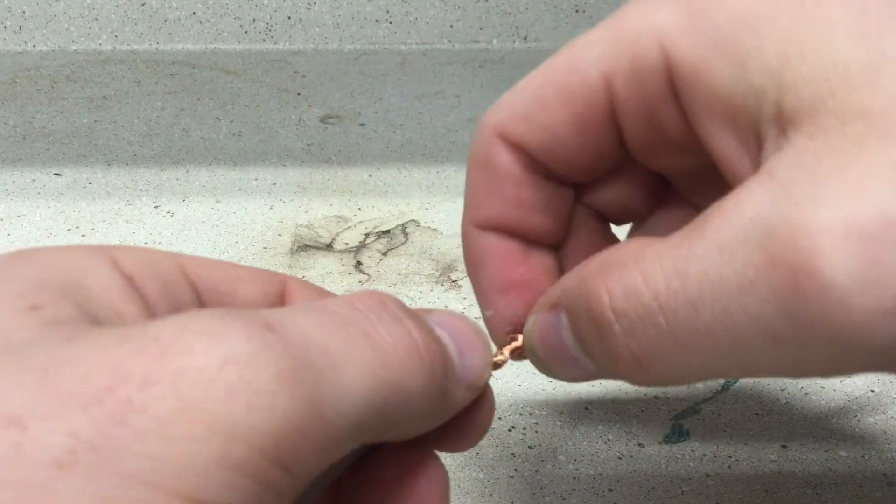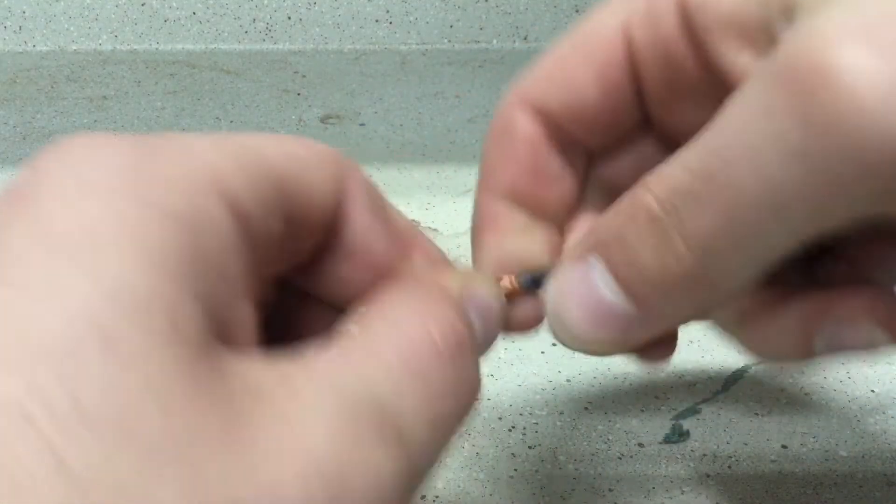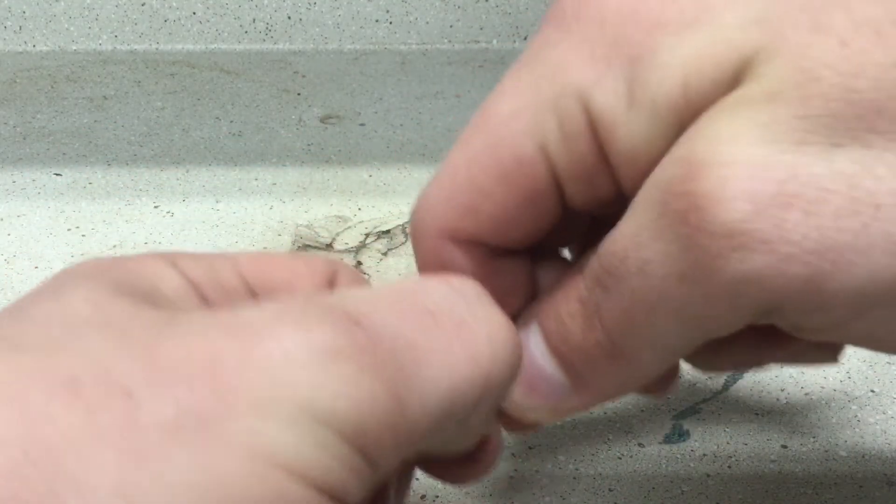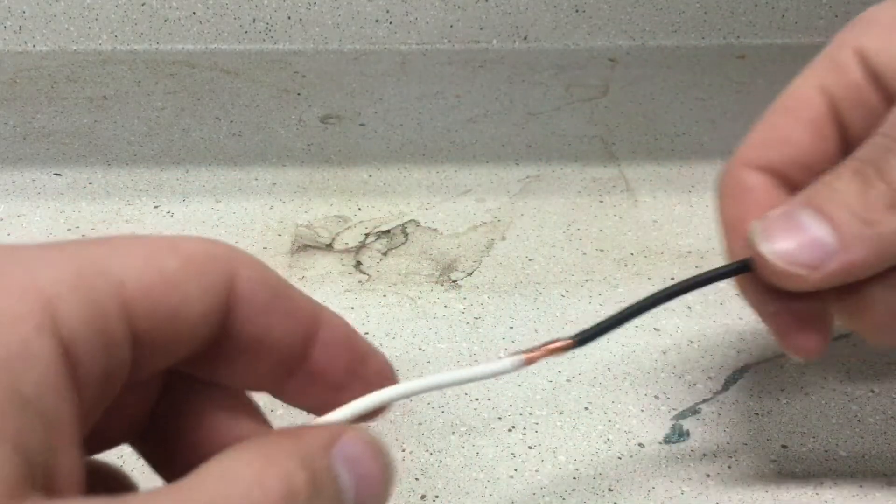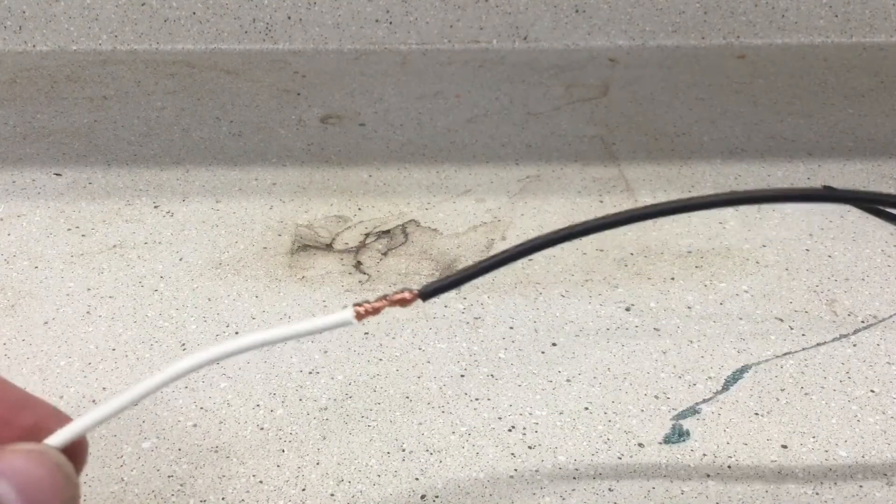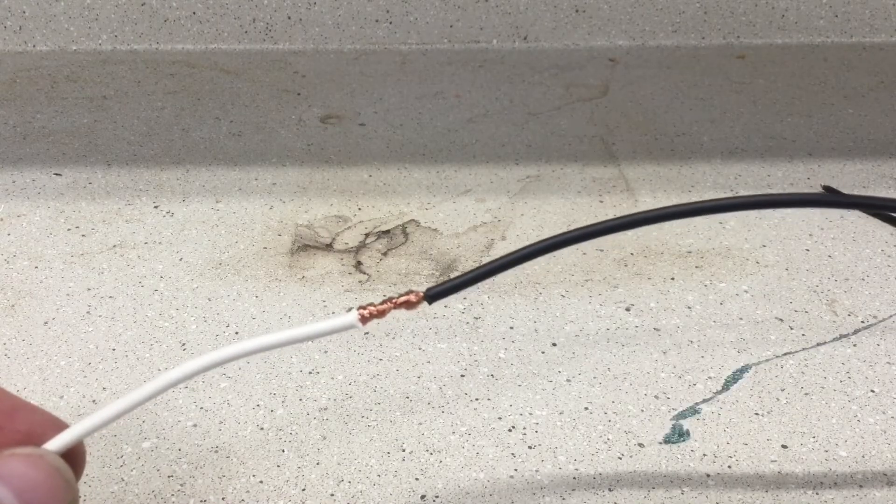If you want it to be tighter or more sturdy, you can use some pliers to tighten it up—just twist in opposite directions. You can put some insulation over it or electrical tape.